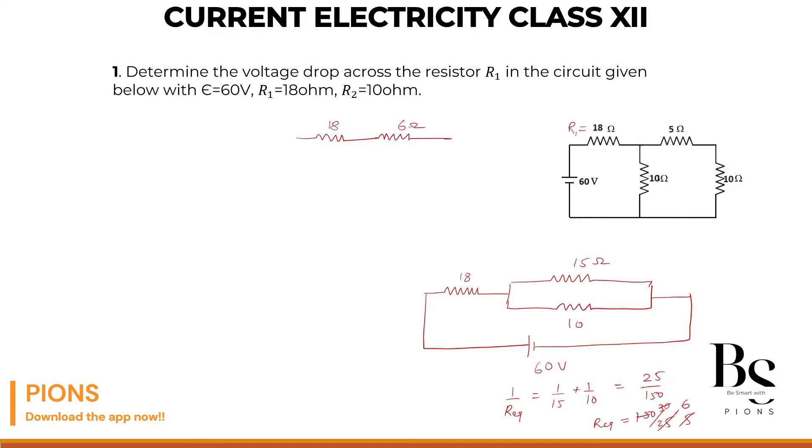You have a simplified version where this whole circuit is 18 ohms and here you have 6 ohms. 18 ohm and 6 ohm connected to 60 volts. You just have to find the voltage across this 18 ohm. Let's find the equivalent of these two.